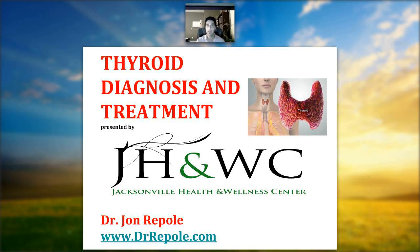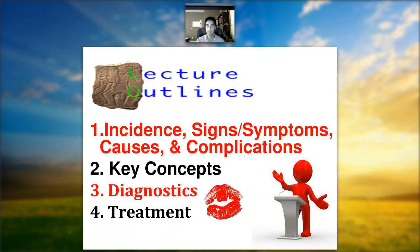We're going to get right into it. The outline for tonight's lecture covers the incidence, signs and symptoms, causes and complications of the thyroid, and some key concepts. Anytime you see the KISS marker, it's a keep-it-simple-stupid principle — important take-home points. We'll also talk about diagnostics and, of course, treatment.